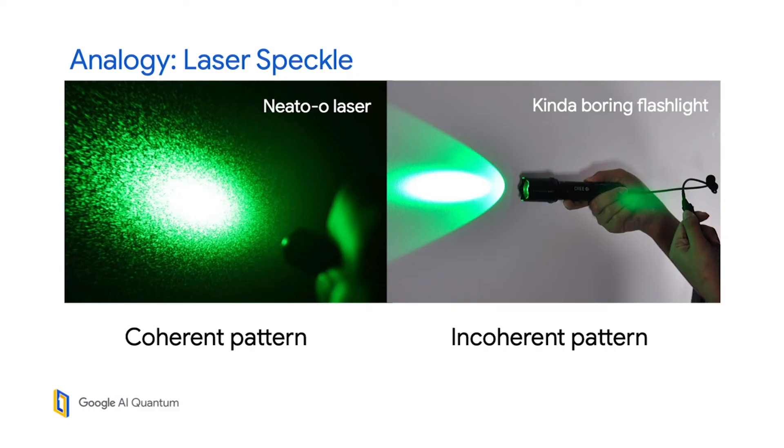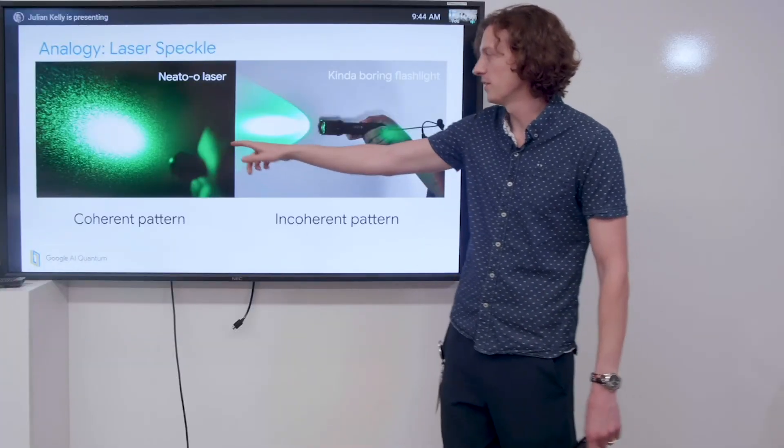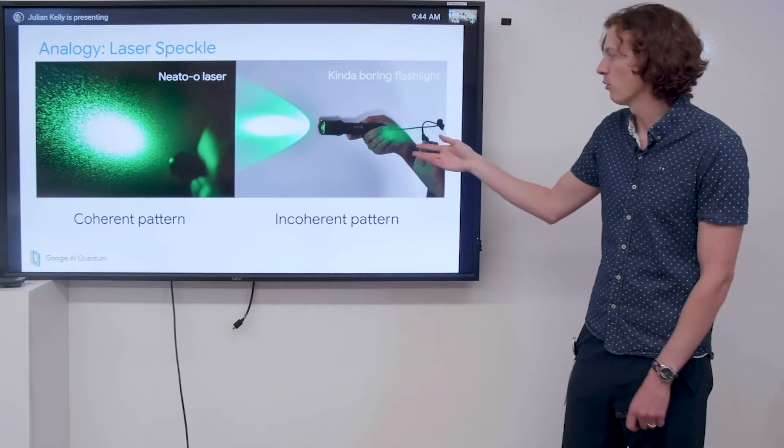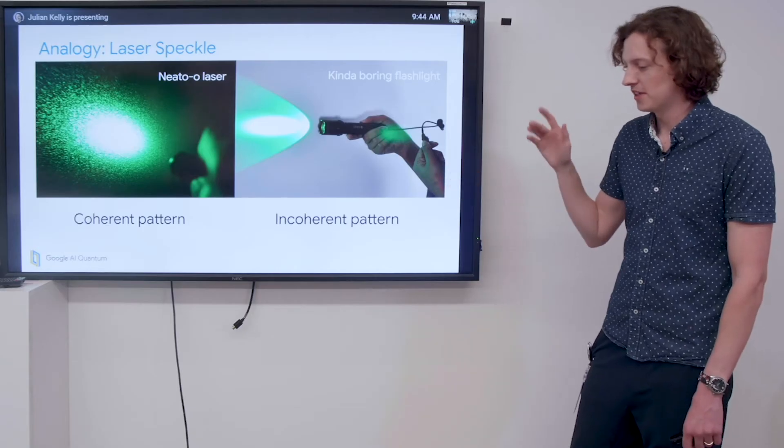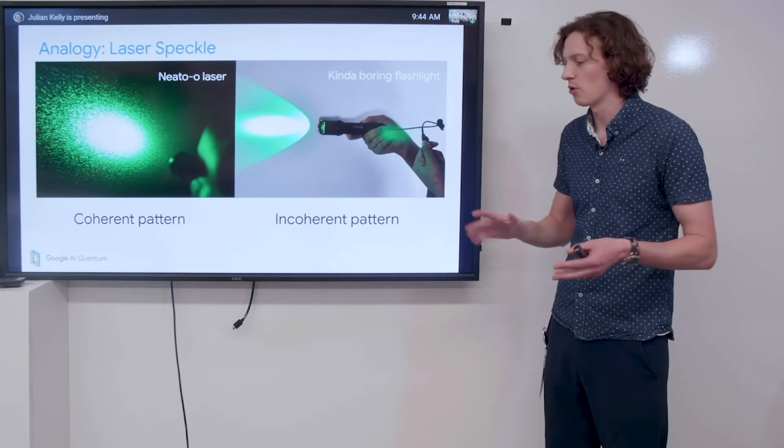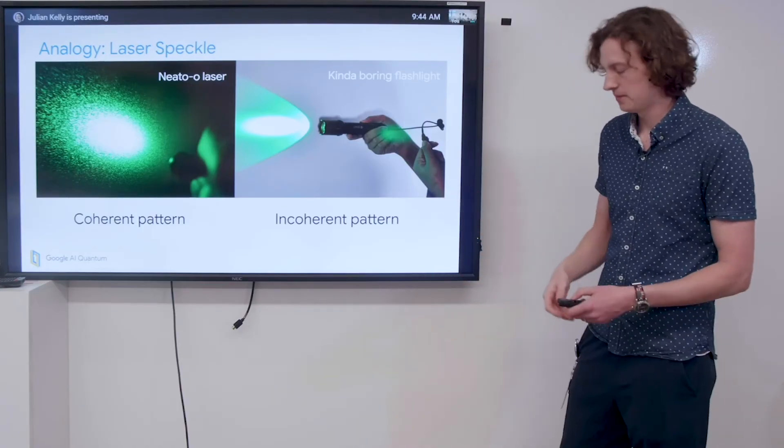Here's a simple analogy. If you take some kind of neat coherent laser and send it through a crazy crystal medium, you can see the speckle pattern showing up on, for example, a wall. But if you take a boring flashlight and point it at something, you just get a very blurred out pattern. This makes sense—if you have a very decohered state and try to perform a complex quantum operation to it, it's really not going to tell you anything. Nothing's going to happen.